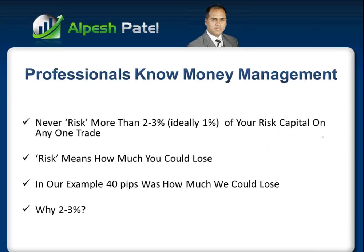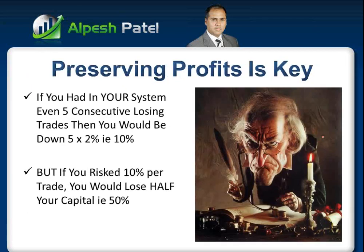Many of you will be familiar with this, and for spread betting the rules apply just as much. We don't want to risk more than 2 to 3% of our capital in any one trade. What does that mean, and why 2 to 3%? Let me explain, because it's incredibly important if you're going to be successful making money. The reason for the 2% rule is simple: if you're wrong five times in a row, you're only down 10%. Most people if they're wrong five times in a row are down about 50% because they're betting vast sums of money.